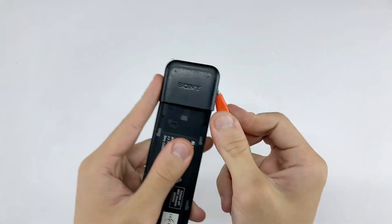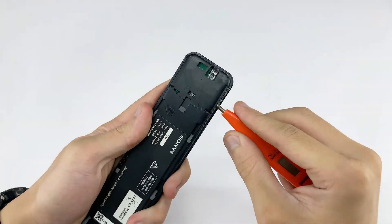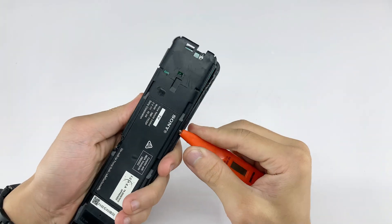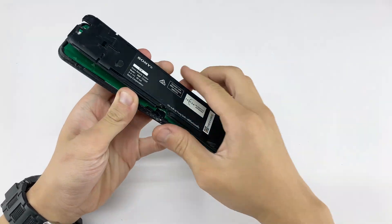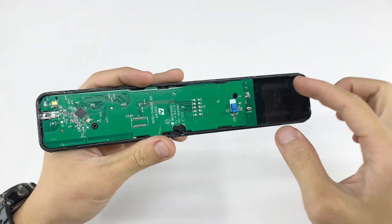I'll use a small screwdriver to gently pry open the casing, releasing any clips and screws holding it together, and then remove the main circuit board. This green circuit board is the heart of our project, and it's what we'll be transforming today.